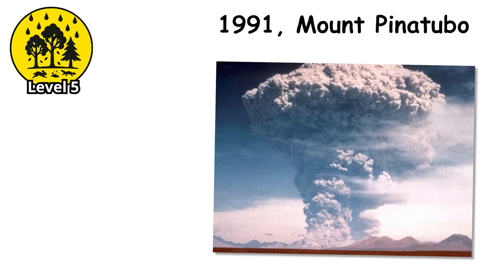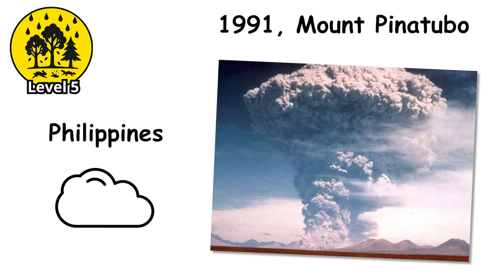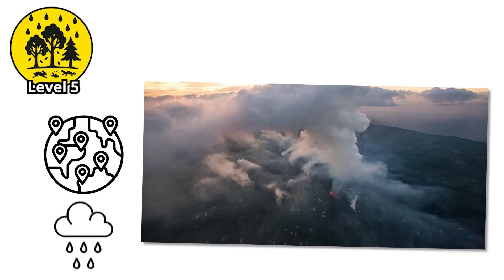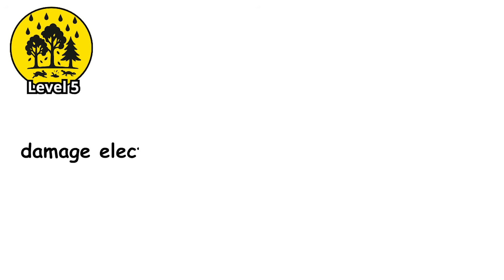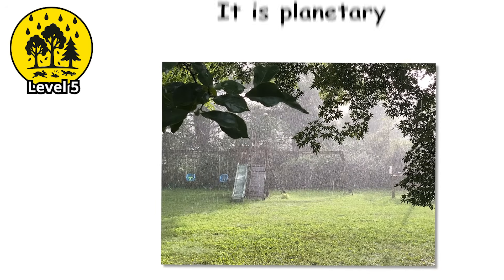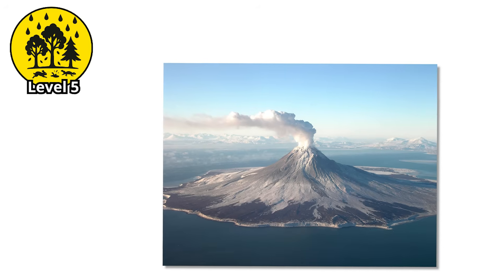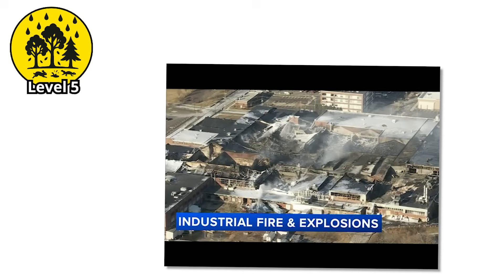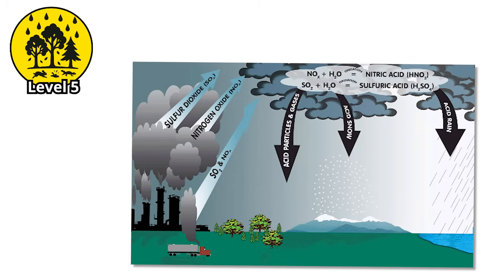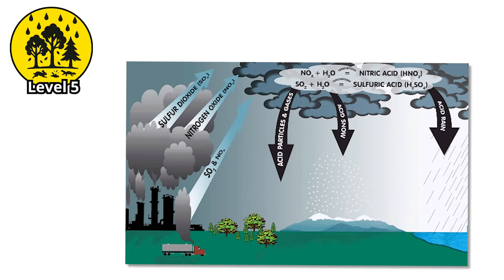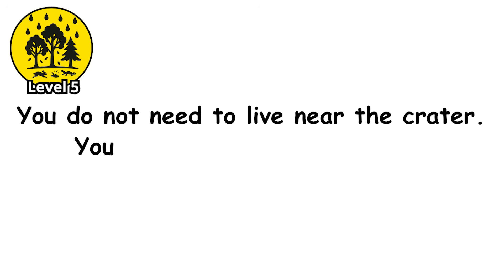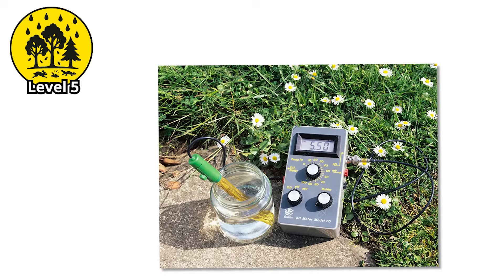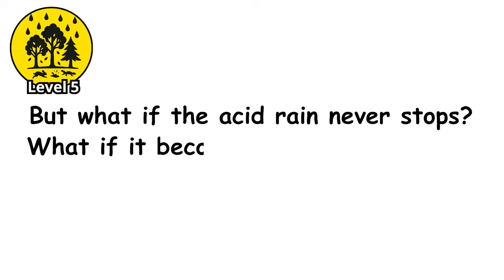Some historians estimate the death toll from the resulting famine and air pollution reached 6 million. In 1991, Mount Pinatubo in the Philippines launched so much sulfur into the sky that it cooled the planet by nearly half a degree Celsius. But before that, the local region was drenched in acid rain strong enough to kill plants, damage electronics, and rust metal within days. Unlike industrial fallout, which fades after the fire goes out, volcanic acid rain can last years, sustained by aerosols trapped in the stratosphere. You do not need to live near the crater — you just need to be downwind.